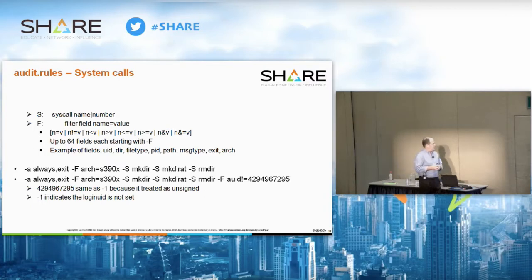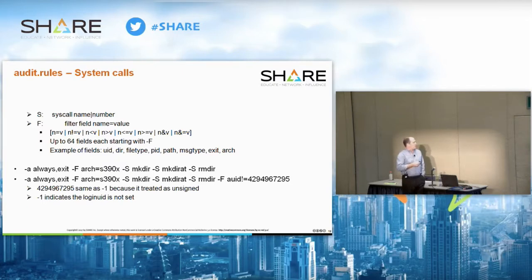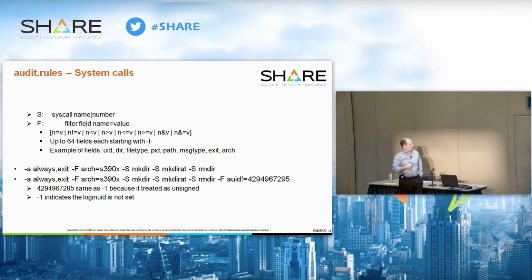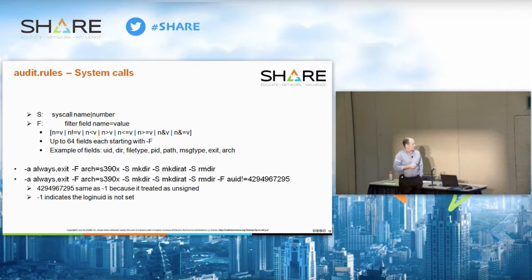The '-S' flag specifies the syscall name or number — every system call that can be made can be listed and utilized. There are a number of different filters you can apply; there are approximately 64 fields available and different ways to put together filter syntax. As an example, there's a rule to always audit on exit of a system call for mkdir, mkdir-at, or rmdir. Another rule has a filter for a very large number that's really a signed integer for -1, meaning the login UID was not set — you'd see a number of those for things running on the system that did not log in.